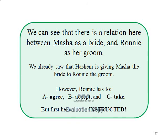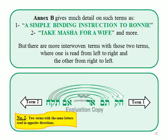However, Roni has to: A, agree; B, accept; and C, take. But first he has to be instructed. Annex B gives much detail on terms such as: one, a simple binding instruction to Roni; and two, take Masha for a wife. And more. But there are more interwoven terms with those two terms, where one is read from left to right and the other from right to left.